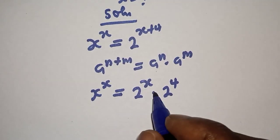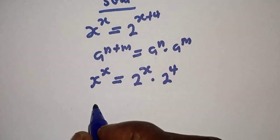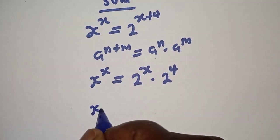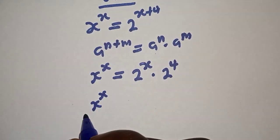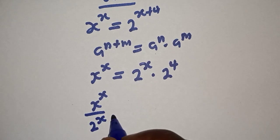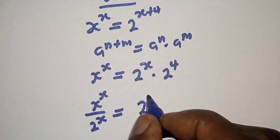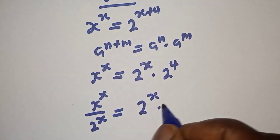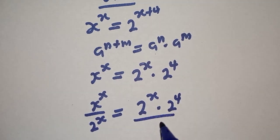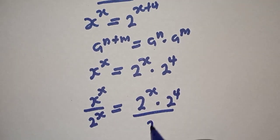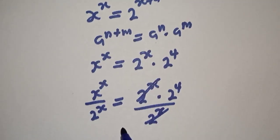Now, let's divide both sides by 2 raised to power s. We have s raised to power s over 2 raised to power s is equal to 2 raised to power s multiplied by 2 raised to power 4 over 2 raised to power s. This will cancel this.